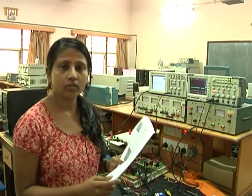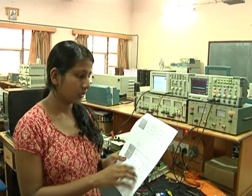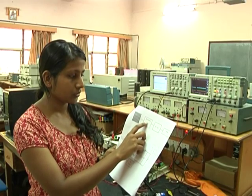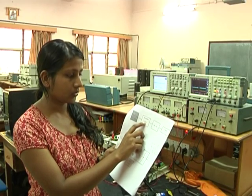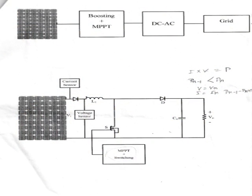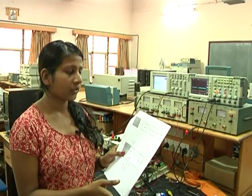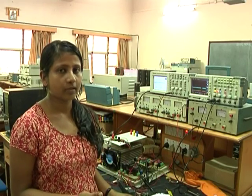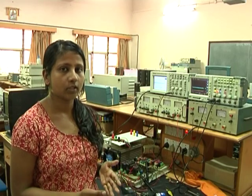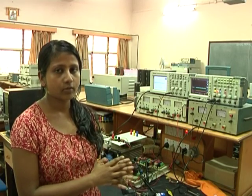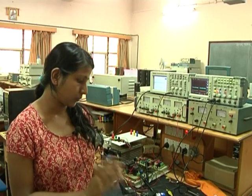We use a power conditioning unit to track the maximum power point. Here we use boosting plus MPPT in one stage to track the maximum power point. Since only one maximum power point exists for a particular environmental condition, we need to track it to use the PV at its maximum power. To track the maximum power point, different algorithms are available: the hill climbing method, the perturb and observe method, and the incremental conductance method. Here we have used the perturb and observe method to track the maximum power point.